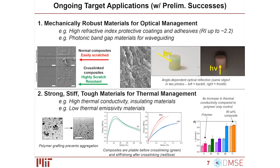On the right is a more advanced application where we can control the organization of particles to make materials with photonic crystal and photonic band gap effects — materials that reflect different wavelengths of light depending on the angle of incident light. The images shown are the same exact material; we're just shining light from different angles to get different optical appearances. Because we can achieve up to 60 to 65 volume percent inorganic content, and inorganic particles can have significantly higher refractive index, we calculate we could in principle make a material with a refractive index up to about 2.2 — significantly above what any polymer could achieve.